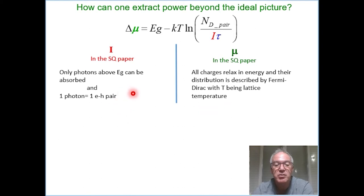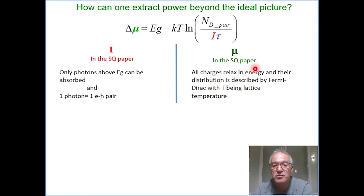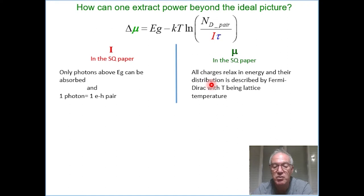We simply need to look at the assumptions. For example, with respect to materials: in this paper he considers only single photon absorption — so there is no two-photon absorption, and also every photon produces only one electron-hole pair. And with respect to equilibrium and the electrochemical potential relation to charge density, there is the assumption that there is relaxation and no such thing as hot carriers that carry more energy.